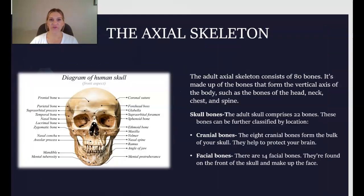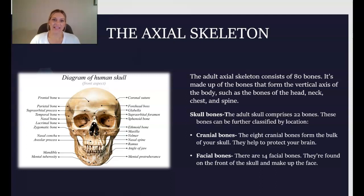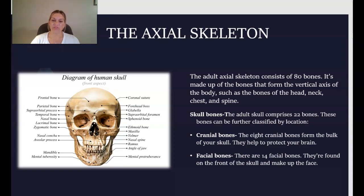We'll start with the axial skeleton. The adult axial skeleton consists of 80 bones, made up mostly of bones that form the vertical axis of the body, such as the bones of the head, neck, chest, and spine. The adult skull comprises 22 bones total. These bones can be further classified by location into cranial bones — there are eight cranial bones, which form the bulk of the skull and protect your brain — and facial bones, of which there are 14, found on the front of the skull.